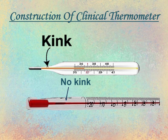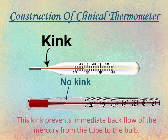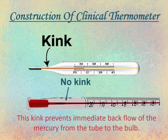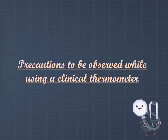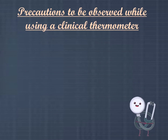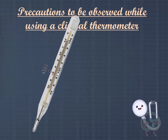This bend or kink prevents the immediate backflow of mercury from the tube to the bulb, thus allowing us to read the temperature conveniently. If the thermometer is to be used again, we give it a jerk to bring the mercury back into the bulb.